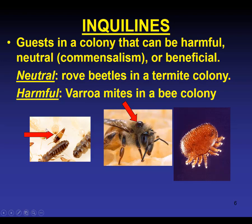Rove beetles — there is a small rove beetle in this pile of termites that has no impact on the termite colony whatsoever. There are also mites. This weird-looking thing is called a varroa mite. Here are the mouth parts, and doing a leg count you've got four on each side, so these are in the mites-and-ticks group of arthropods, related to spiders.